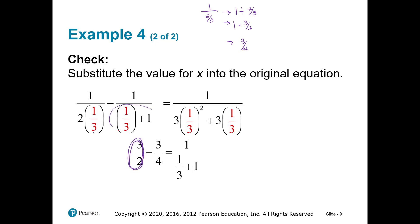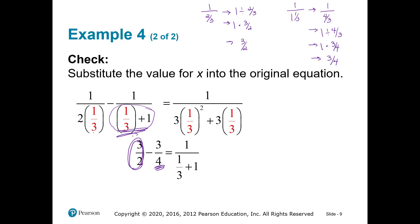Let's look at the second denominator — that's 1 plus a third, which is one and a third, so that's 1 over four-thirds. That means 1 divided by four-thirds, which is 1 times 3 over 4 because you flip by the reciprocal — so just three-fourths. I'll let you take care of the third one. When you subtract three-halves and three-fourths, you get three-fourths, and when you simplify the other side, you get three-fourths too.